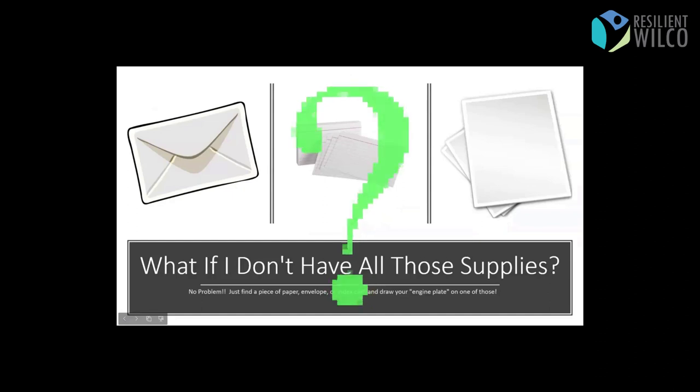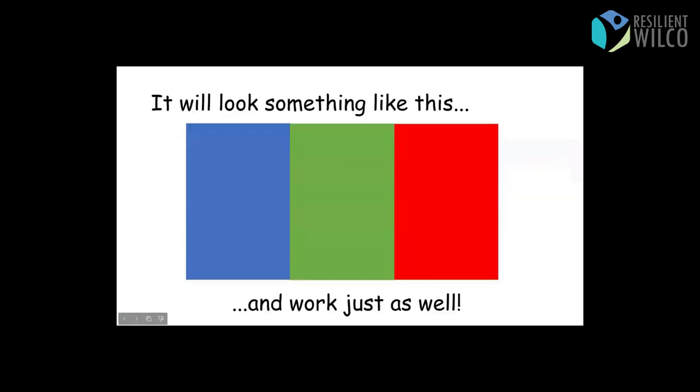Okay. But what if I don't have all those supplies? That's okay. We can do the engine plate a different way too. So just find a piece of paper, an old envelope, an index card, whatever. Something to color on. And that can become your engine plate. It's not going to have all the moving parts, but it doesn't really need to because you know what the purpose of it is. It's a tool for you to use so that you can feel calm and learn to live your best life. And it's going to look something like this. It's going to be probably in the shape of a rectangle. You're just going to color in three columns, the same colors, blue, green, red. And it works just as well. You don't need the arrow and all that other fancy stuff. What's important is that you have the tool and you know how to use it.